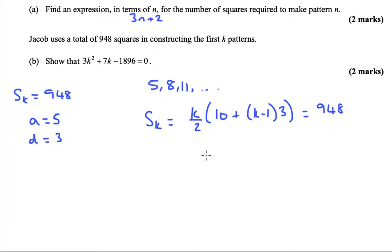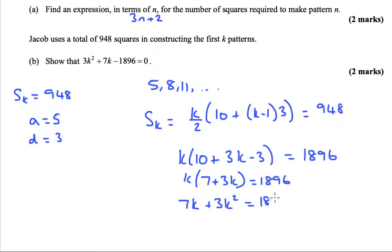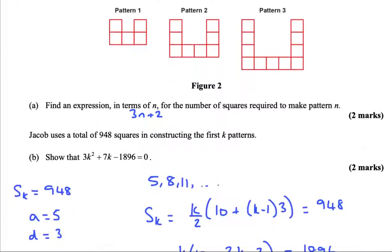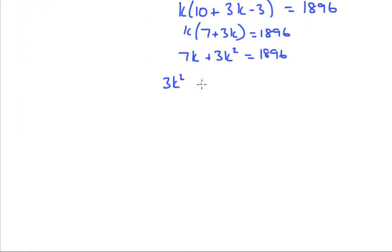If we multiply this out, well let's double it first. 948 times 2 is going to be 1896. So we've got k lots of 10 plus 3k take 3 is equal to 1896. Expanding this, that should be 7 plus 3k, which we're going to expand: 7k plus 3k squared equals 1896. And if we move the 1896, you'll see where this is heading. Switch it around as well, put the quadratic part at the front.